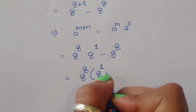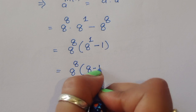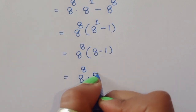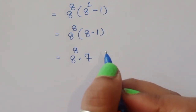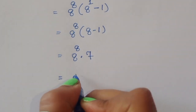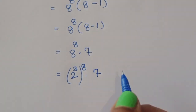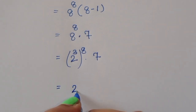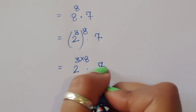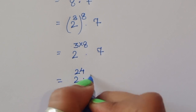Taking 8 power 8 common, we are left with 8 power 1 minus 1, which equals 8 power 8 times (8 minus 1), that is 8 power 8 times 7. Now this 8 we can convert to power form: 8 is 2 power 3, so 8 power 8 becomes (2 power 3) power 8, which equals 2 power 24, times 7.